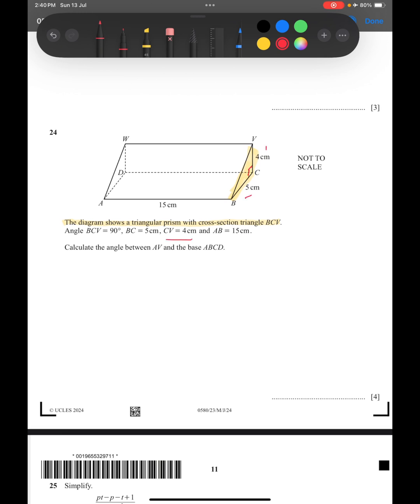BC is 5 centimeters and CV is 4 centimeters, and AB is 15 centimeters. Calculate the angle between AV and the base ABCD. We can join AV, let's join AV. So this is AV.